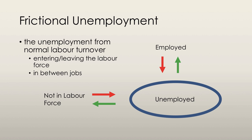An example of moving from employed to frictionally unemployed would be someone who doesn't like their job, leaves their job, looks for a new one, and finds another one. So they are employed, they leave their job, they are unemployed, then they find a job and they're employed again. That's how the frictional unemployment rate changes.